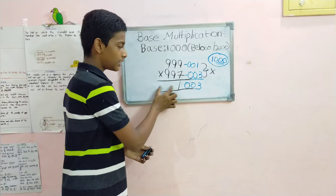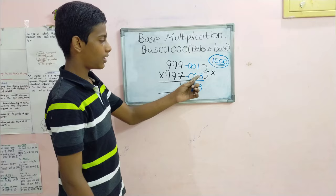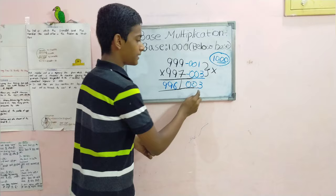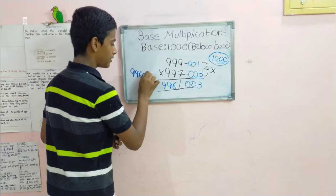For obtaining the left part of the answer, we have to subtract 001 from 997 or 003 from 999, as both result in the same answer: 996. Hence, we obtain the product 996003.